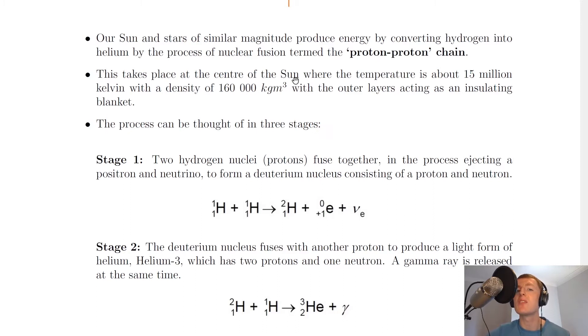This takes place at the centre of the sun, the core, where the temperature is about 15 million kelvin with a density of 160,000 kilogram metres cubed, with the outer layers acting as an insulating blanket. The process can be thought of in three stages.